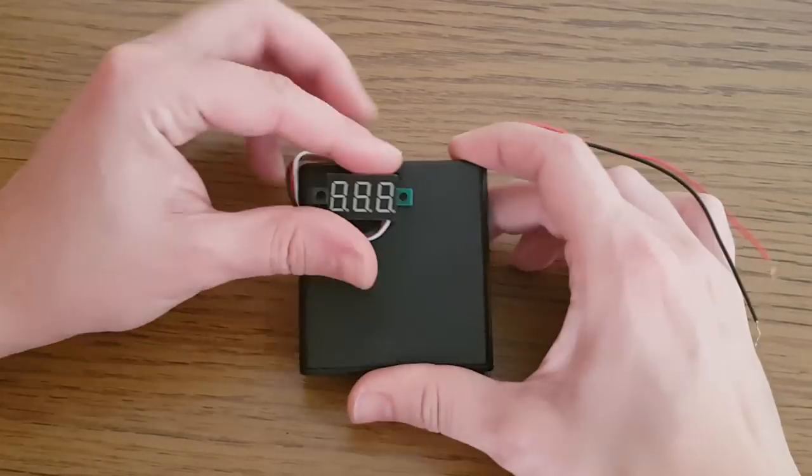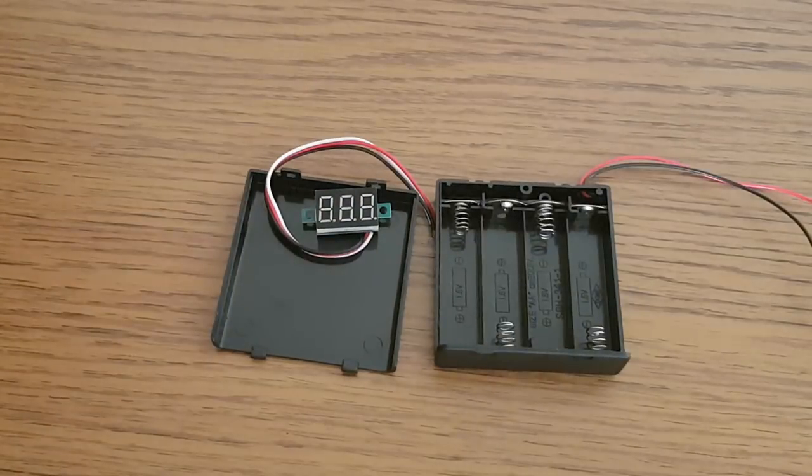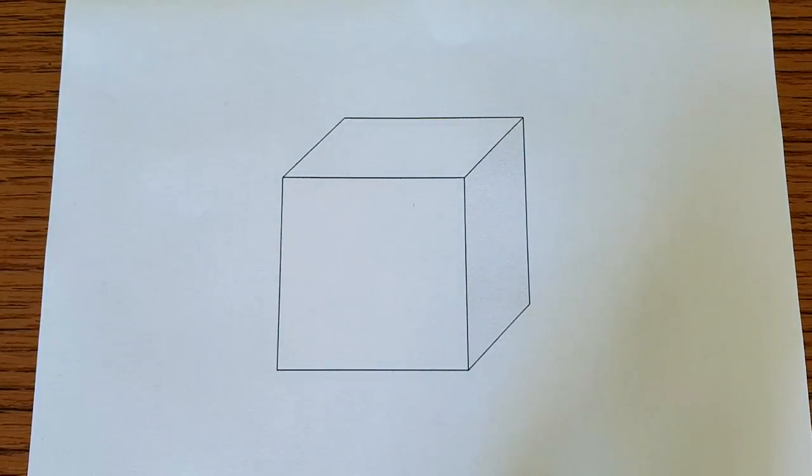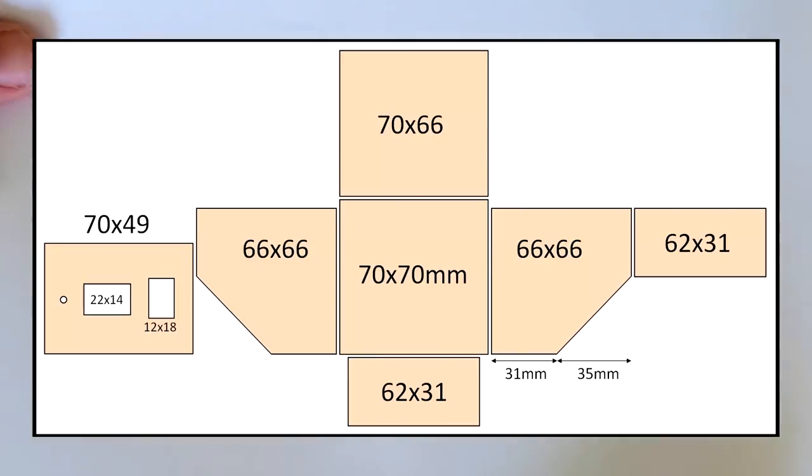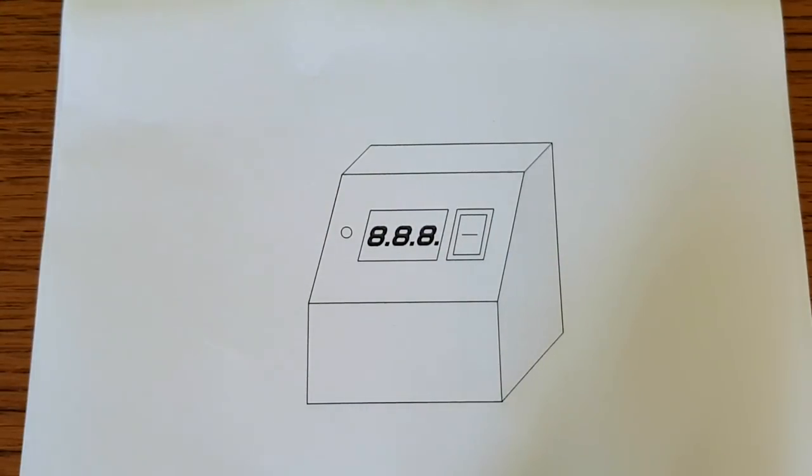It's time for the voltmeter enclosure. You can put everything in a simple plastic box, like a battery case. Or you can create your own personalized box. This is the schematic for my voltmeter enclosure. I'll make it out of 4 mm plywood.